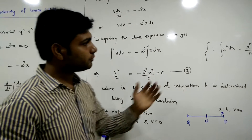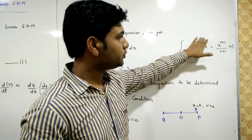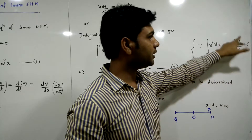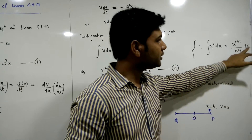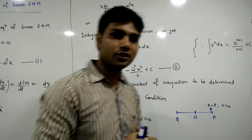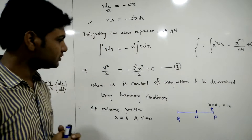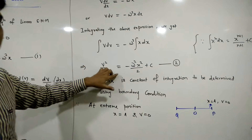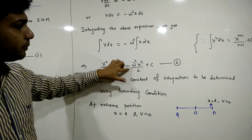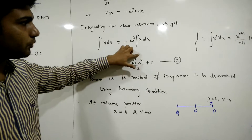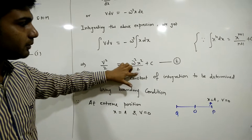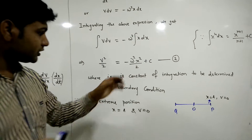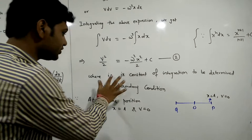Using the integration formula ∫xⁿ dx = xⁿ⁺¹/(n+1) + C, we can write v²/2 = -ω²x²/2 + C, where C is the constant of integration.